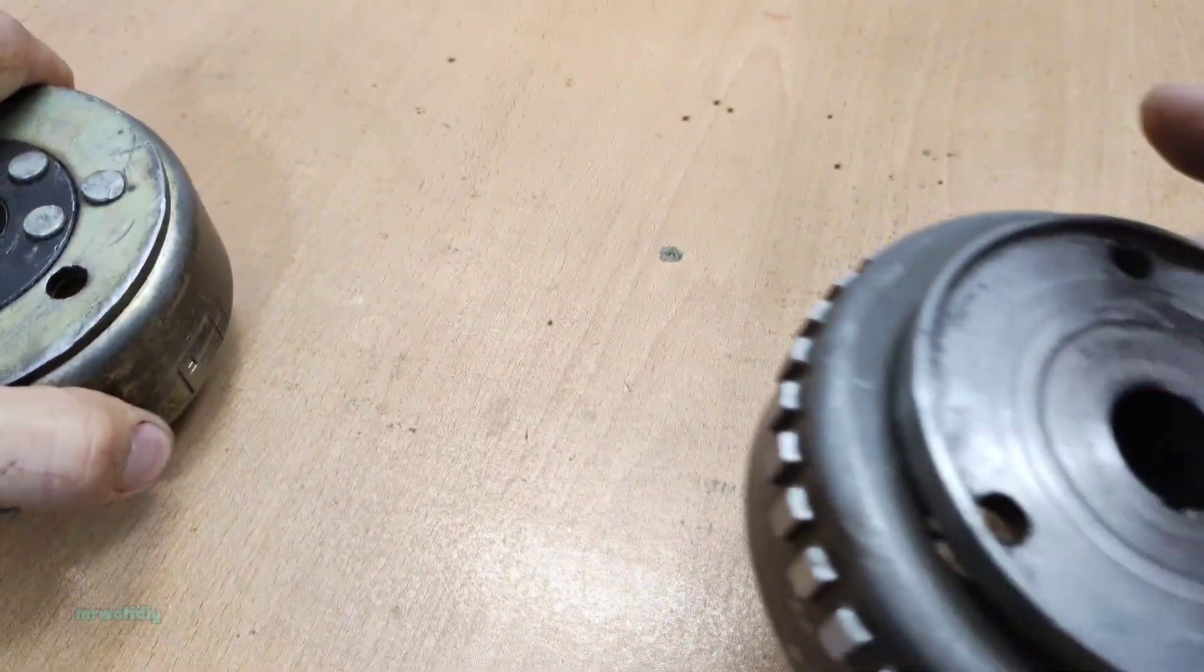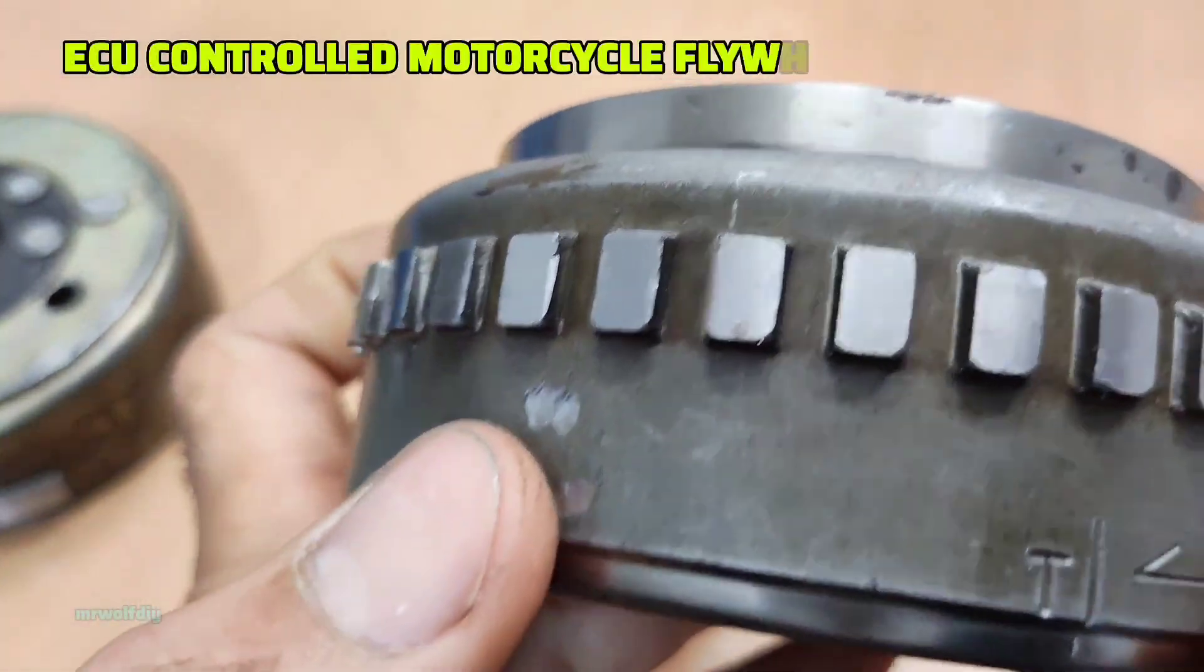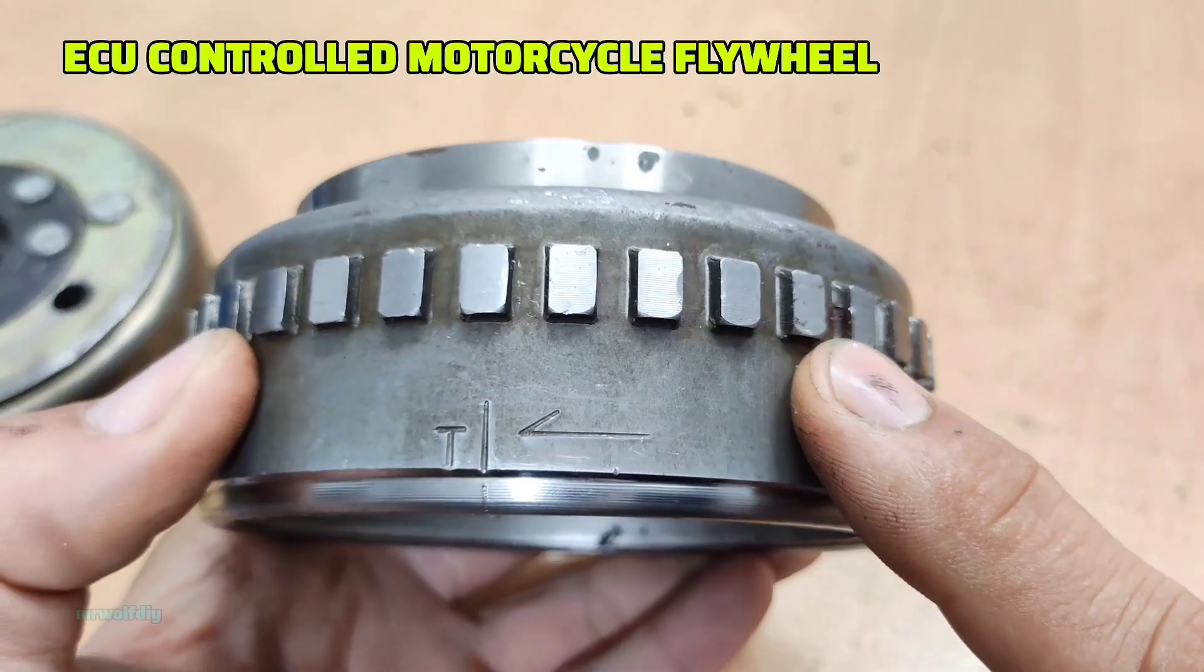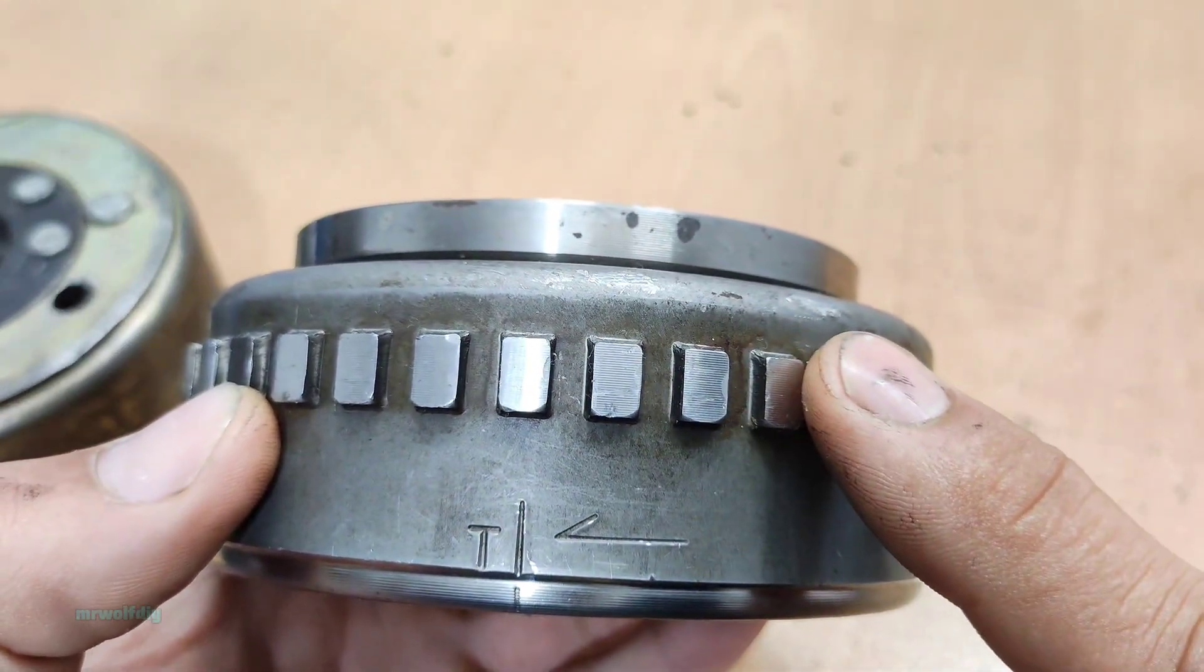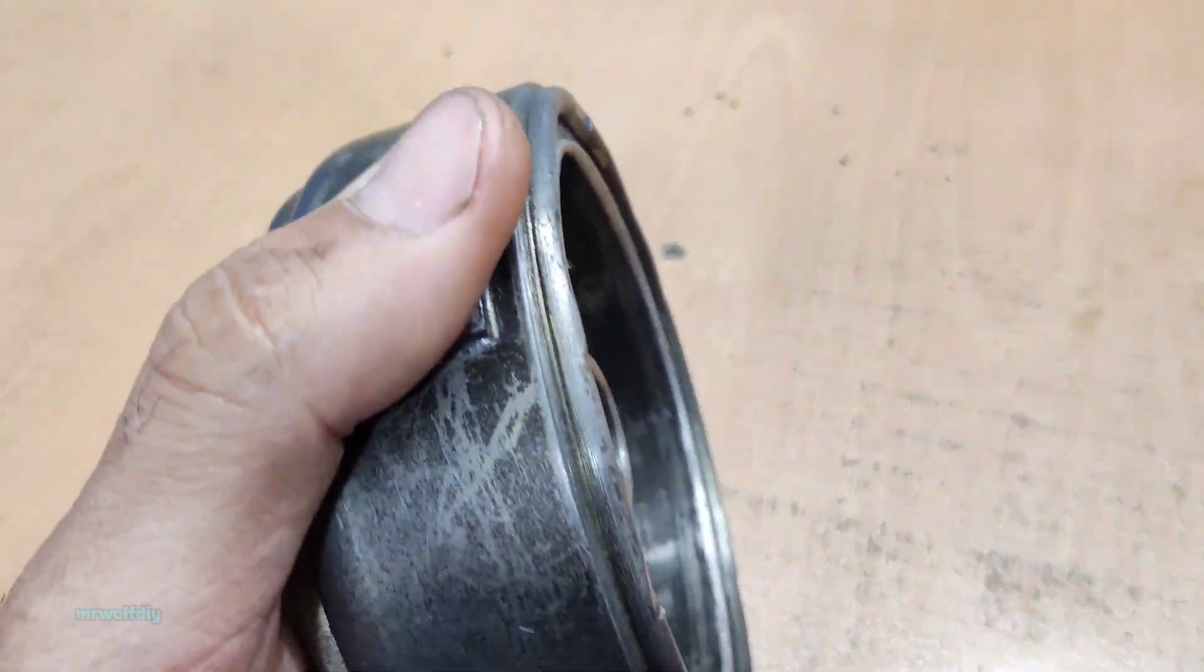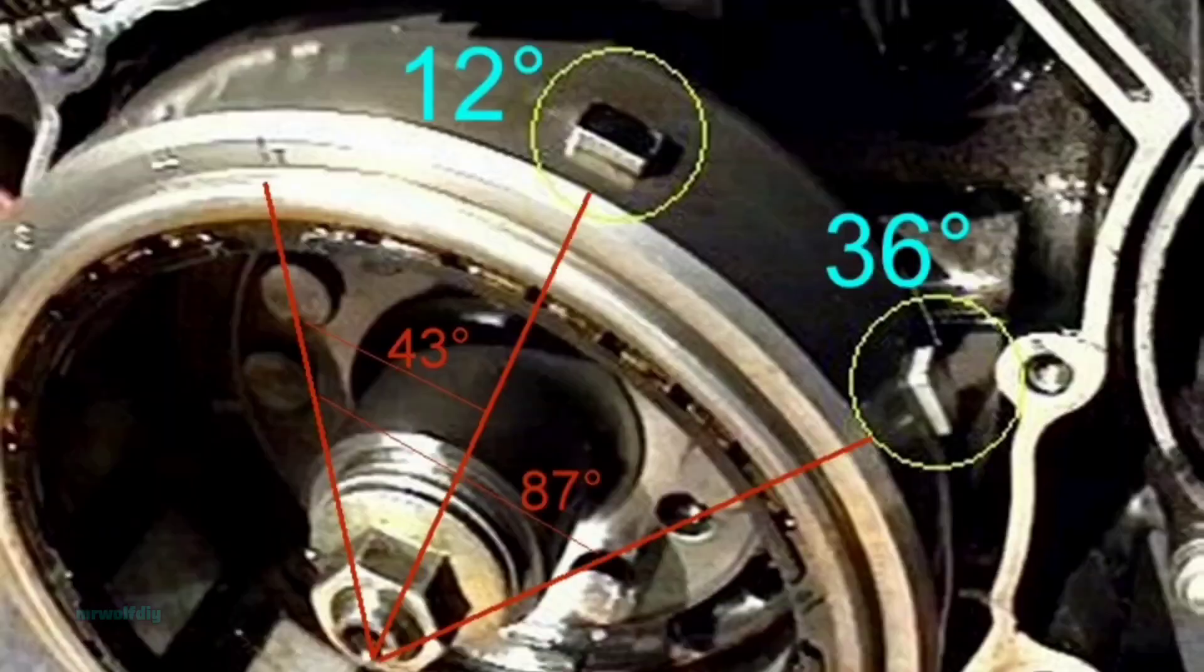But in bikes with an ECU, the flywheel has more tabs at different angles. But in carburetor bikes, you usually have one or two tabs for the pickups.